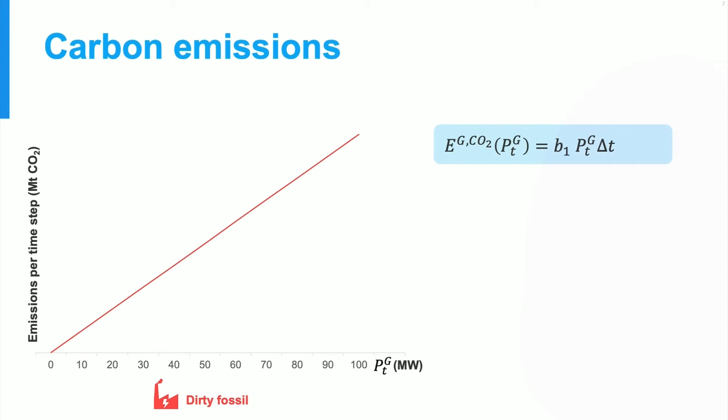For this simple model, a single parameter, B1, is sufficient. And clearly for the clean fossil plant, we'd have a lower number, reflecting the fact that its emissions are much lower for an equal amount of power being produced. And we put this parameter to zero for the renewable resources, which do not generate emissions at any power level.